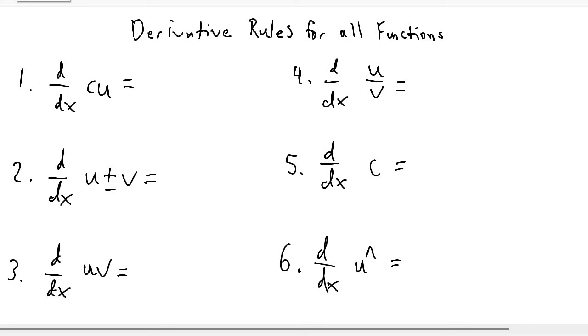Here are the derivative rules for all functions. Starting with number one, the derivative of a constant multiplied by a function u is just going to be the constant multiplied by u prime.